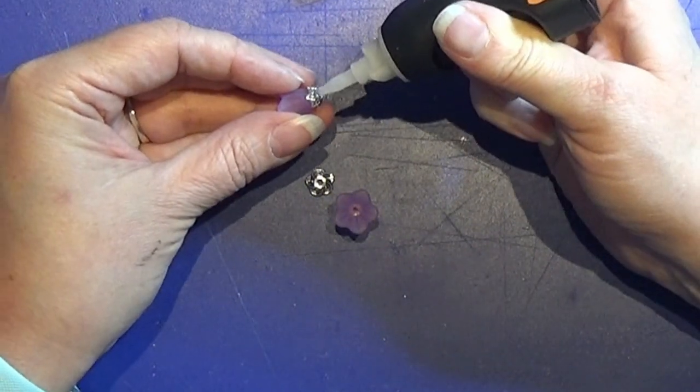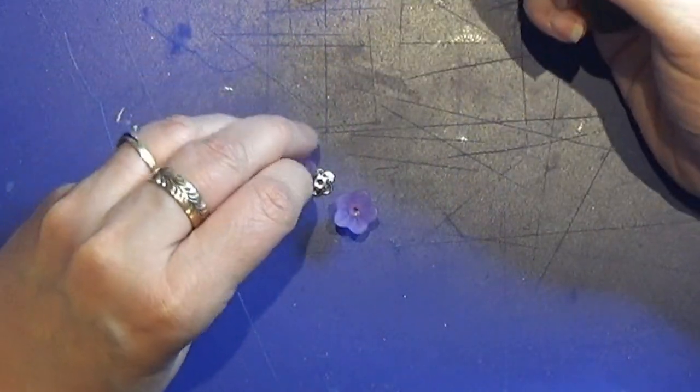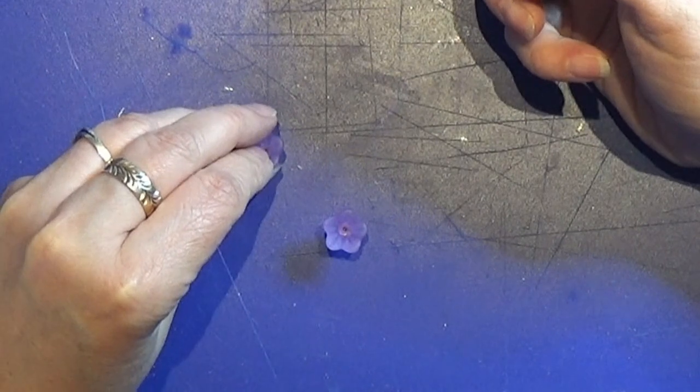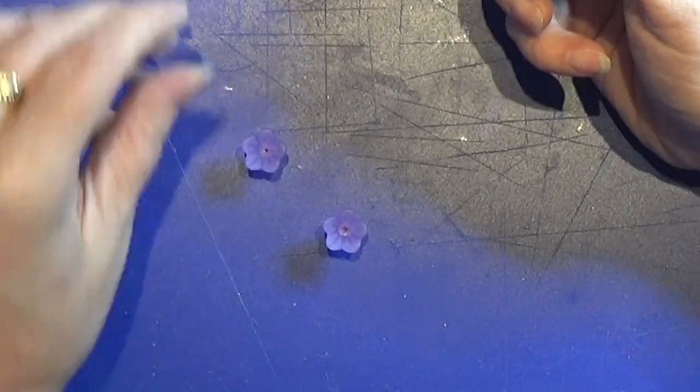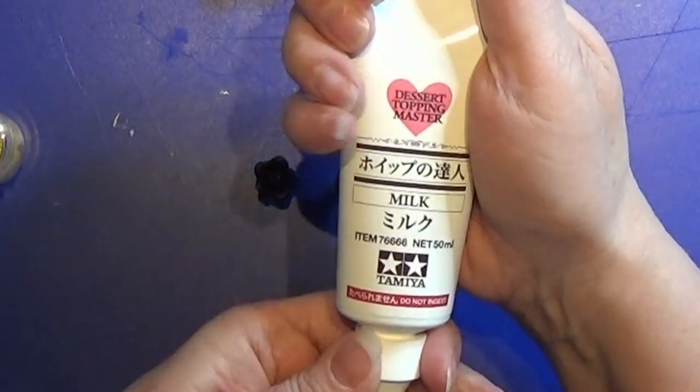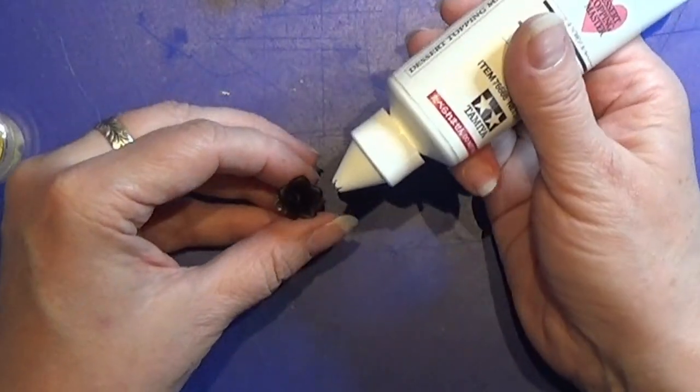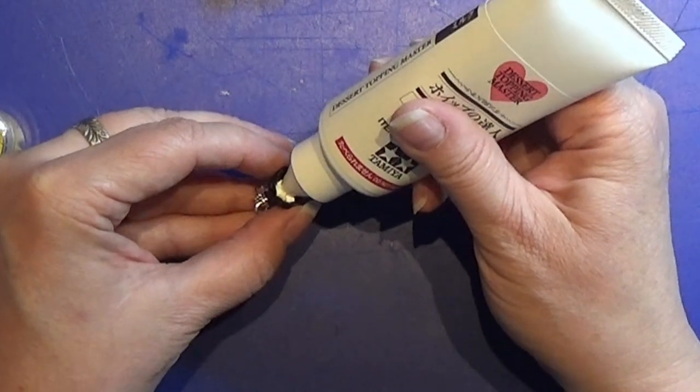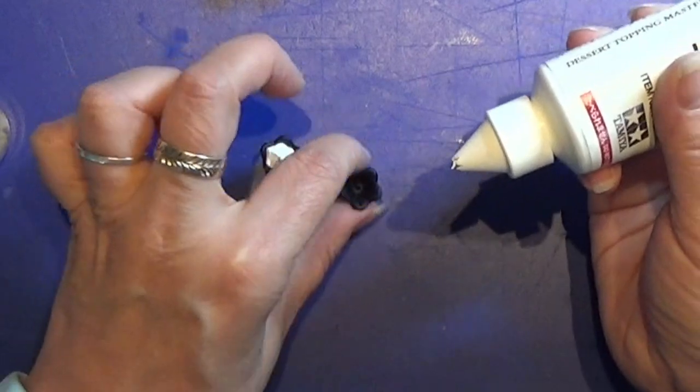So when I have glued these parts together I have these kind of shapes that can be a dessert glass like this. So I'm using my dessert topping master and this is the milk one to make the dessert in these small cups.